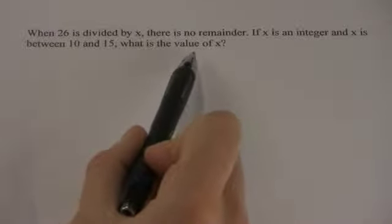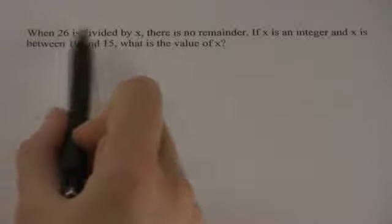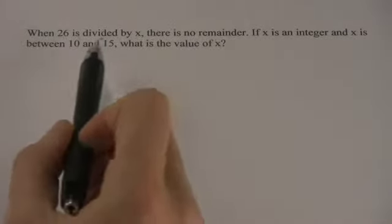This question is asking us to find a value of a number between 10 and 15, where if we divide it into 26, there's no remainder. This is what we call a guess and check.